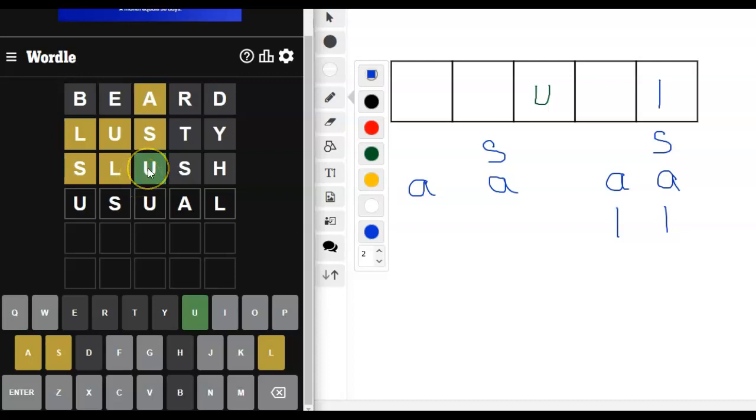So we know there's a U here, but we don't know if there's two U's or not. And a U could go here. We haven't excluded it. We know there's an S and it could go here. We haven't excluded it. We know the U goes here. We know there's an A. That's been hard to place, but it could go here. And we know there's an L and it could go there.